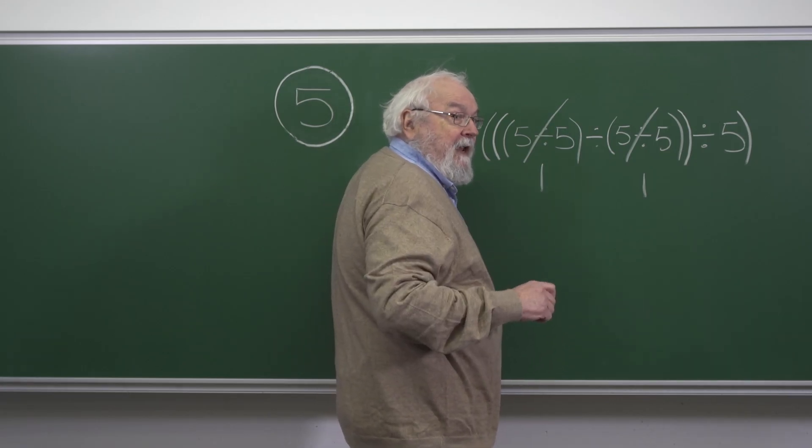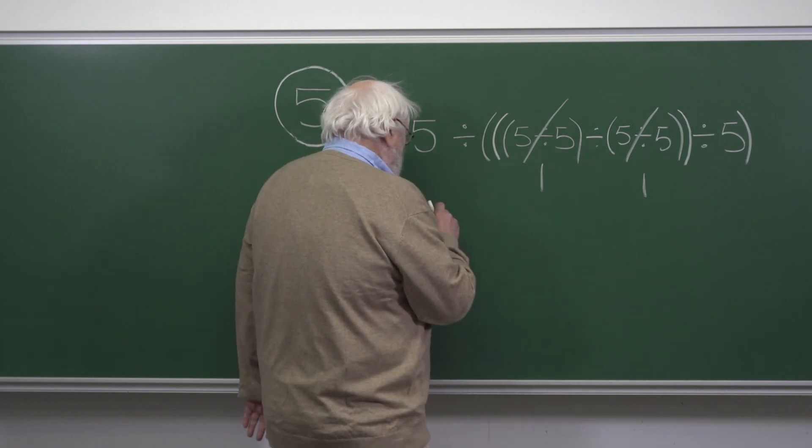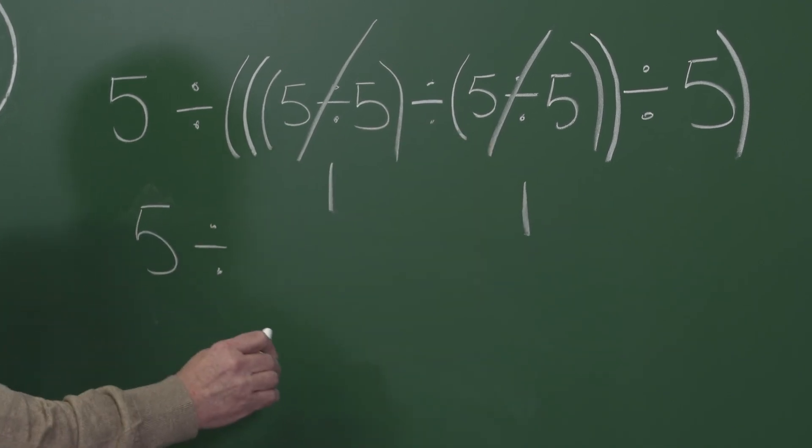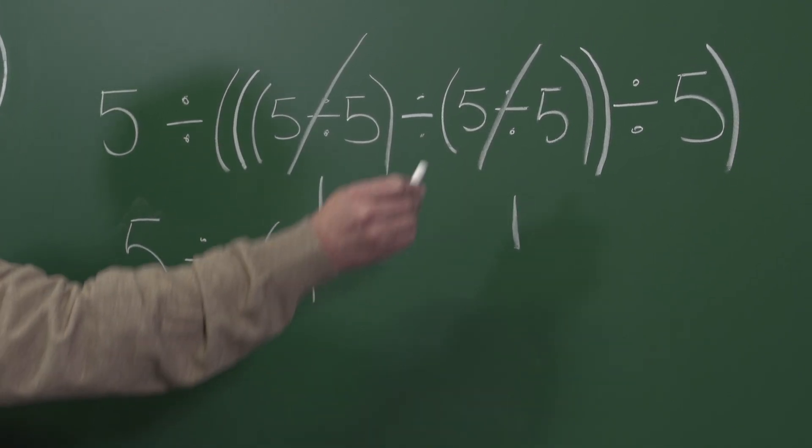So let's write it down again on another line. We have five divided by, one divided by one is one divided by five.